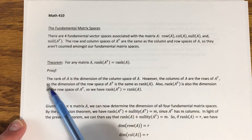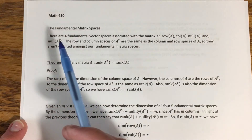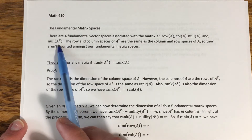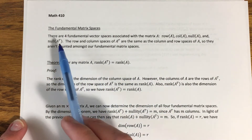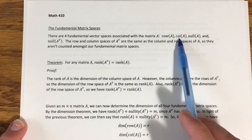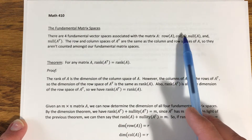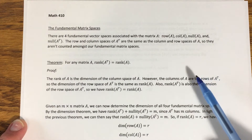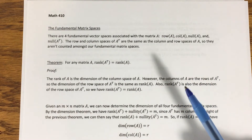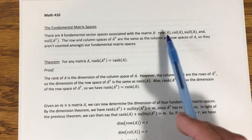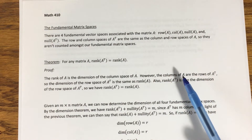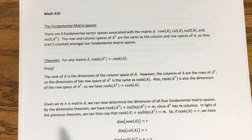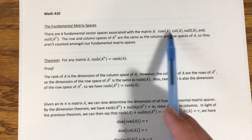Take the transpose of A and find its null space. The reason we're not also considering the row space and column space of A transpose is because the row space of A transpose would be the same thing as the column space of A, simply because the columns of A become the rows of A transpose. So it's the same set of vectors spanning that vector space. Similarly, the row space of A is going to be the same thing as the column space of A transpose. So there's no point in including those in our fundamental matrix spaces — they're already there.